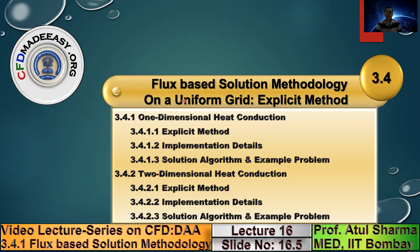This solution methodology is presented first for unsteady one-dimensional heat conduction. For both the one-dimensional and two-dimensional cases, we start with the solution method — the explicit method — then move to implementation detail and finally the solution algorithm, followed by some example problems.